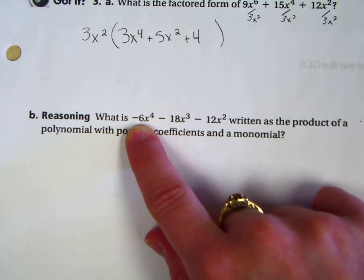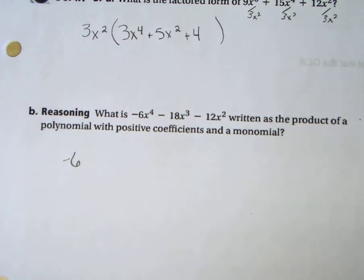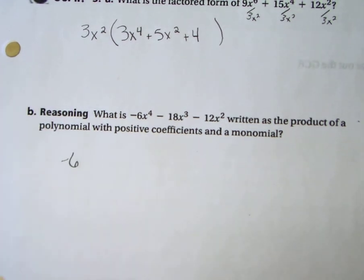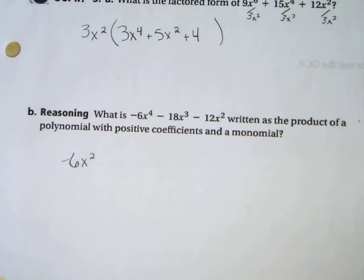A negative 6 is what we are going to pull out. We always want to pick out the biggest one that goes into each. Now look at the x's. x^2 is what we'll pull out of each one.